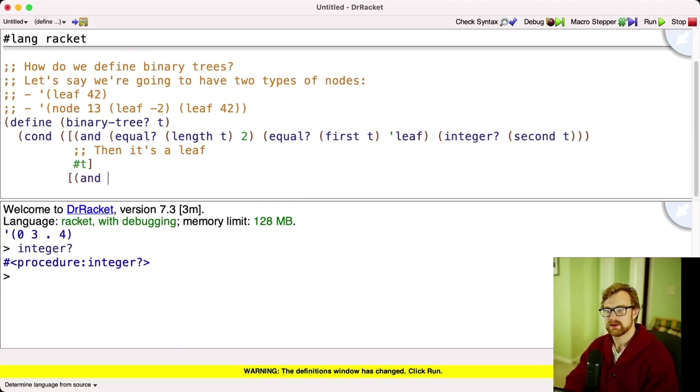So let's say equal? length t is going to be four. And then we're going to say equal? first t is going to be 'node'. And then we're going to say binary-tree? of the third. What needs to be true of second? Needs to be integer? So integer? second of t.